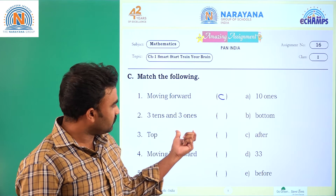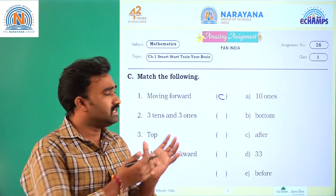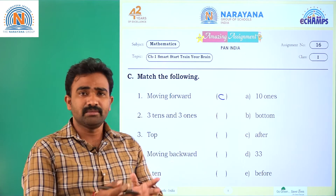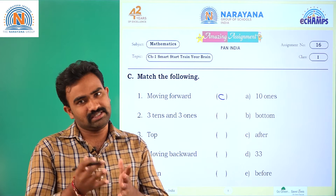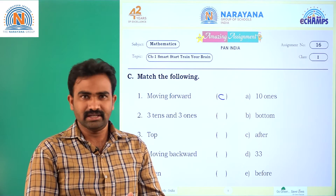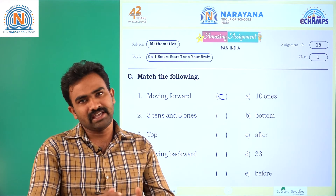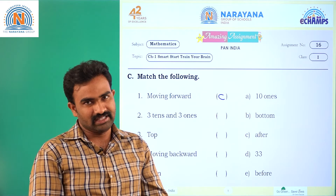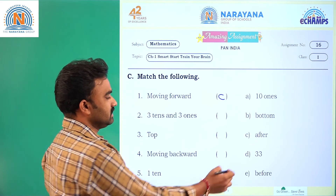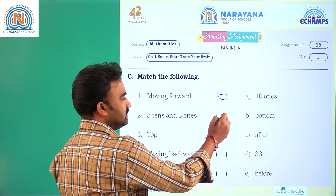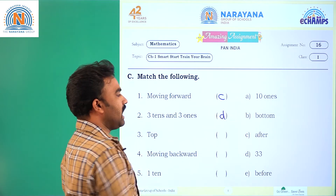Next one: three tens and three ones. Three tens is nothing but 30, and three ones is nothing but 3. So 30 and 3 is equal to 33. Where is 33? It is at option D, so D is the answer.